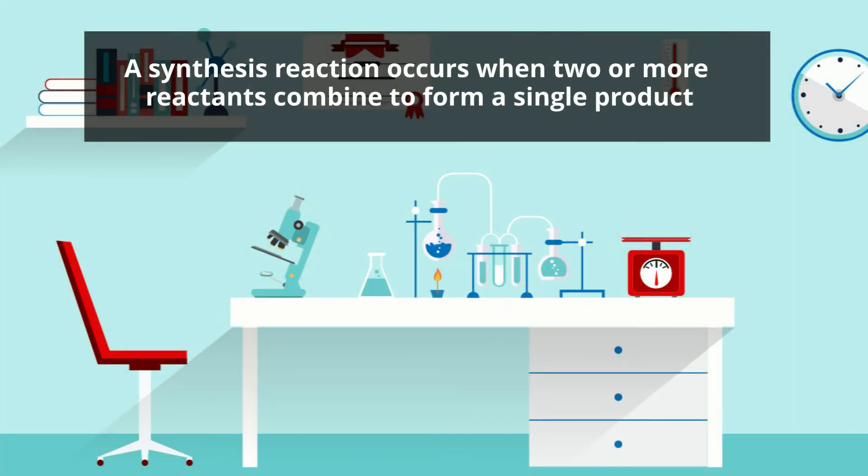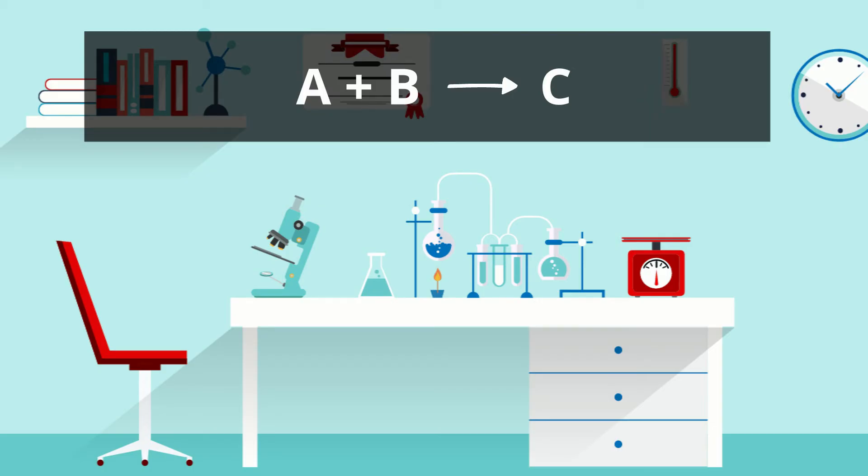A synthesis reaction occurs when two or more reactants combine to form a single product. A synthesis reaction can be represented by the general equation A plus B yields C. In this equation, the letters A and B represent the reactants that begin the reaction, and the letter C represents the product that is created or synthesized. The arrow shows you the direction.